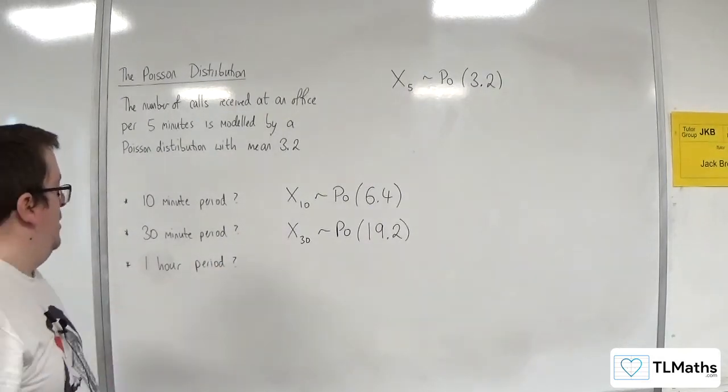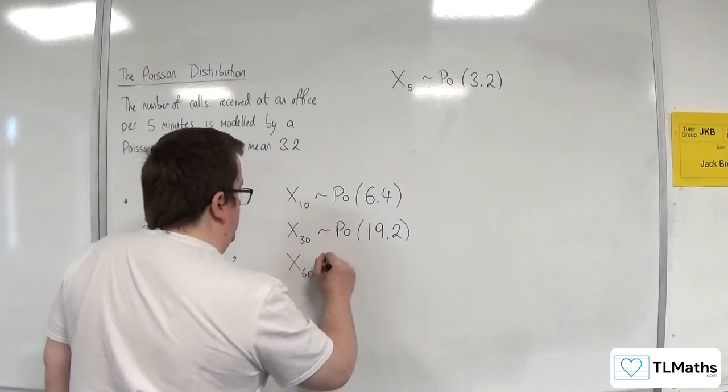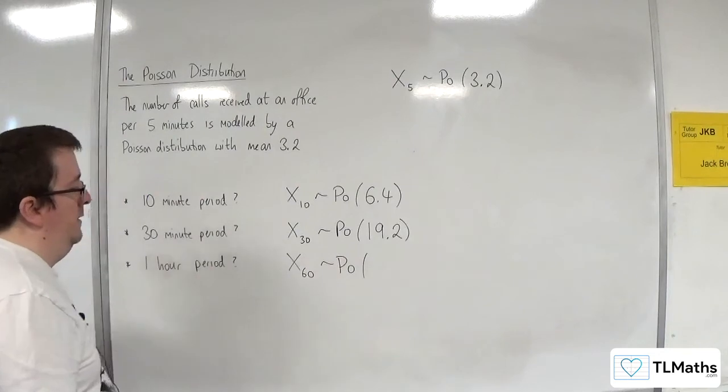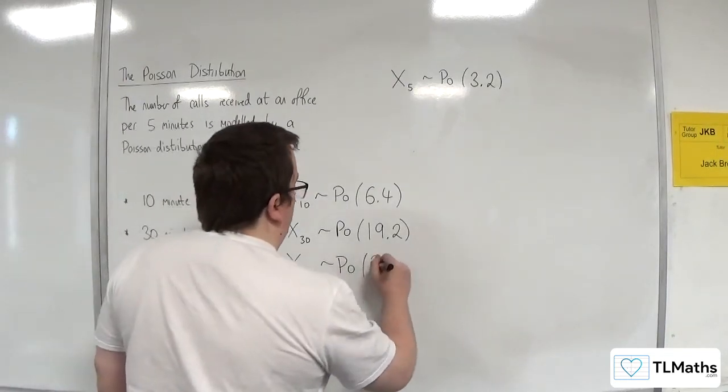If it's a one-hour period, that's a 60-minute rate, a 60-minute period. So X60 would be a Poisson distribution with an average of 38.4.